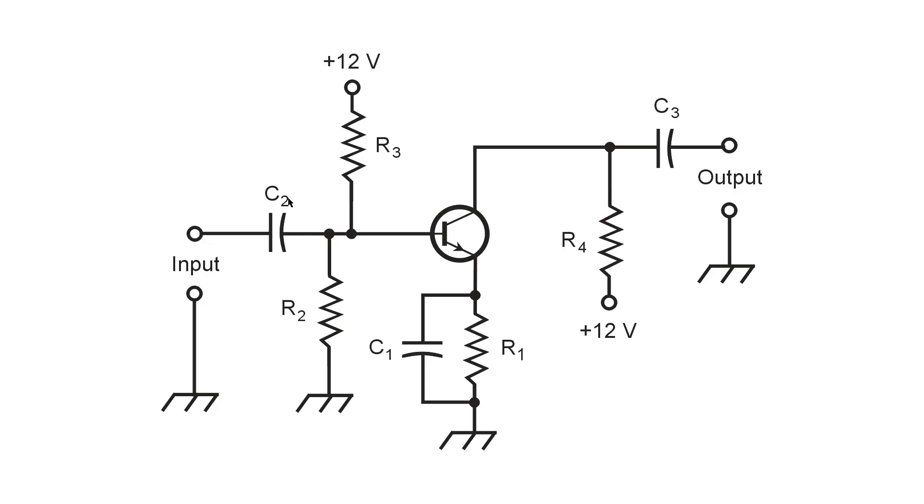It, like C2, is a blocking capacitor, meaning that it blocks direct current but allows signal through. So at the output you get an AC signal, hopefully, if all of the values of the resistors are correct, such that it has a much greater amplitude than the input signal does.